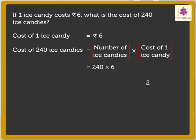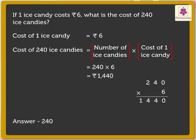Therefore, 240 into 6 is equal to 1440. Thus, 240 ice candies cost 1440 rupees.